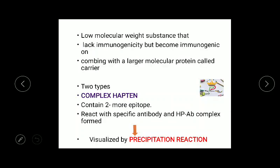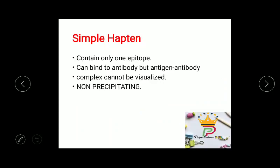Complex haptens react with specific antibodies and form a hapten-antibody complex. This hapten-antibody complex can be visualized by precipitation reactions. Simple haptens can bind to antibodies, but the hapten-antibody complex cannot be visualized because it is non-precipitating in nature, so we cannot visualize the hapten-antibody complex.